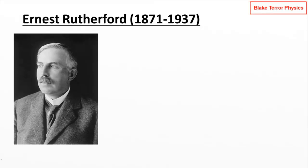Thomson came up with what's now referred to as the plum pudding model of the atom, something which was subsequently shown to be false by none other than Rutherford himself. Rutherford was assisting Thomson during the discovery of the electron, and he then moved into radioactivity, providing better descriptions of alpha and beta radiation — and it was Rutherford who came up with those names.